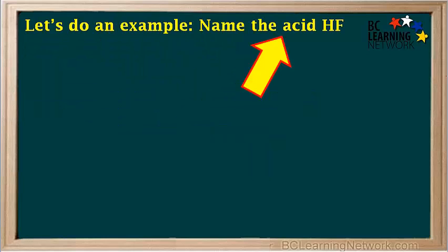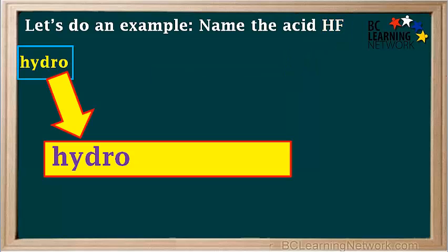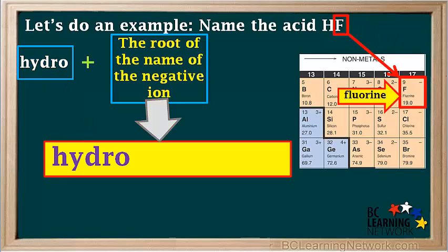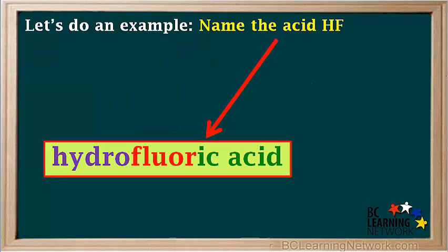Let's do an example: name the acid HF. HF is an acid without oxygen, so we use the rules for naming acids without oxygen. We start by writing the prefix hydro. Next we add the root of the name of the negative ion — the element is fluorine, so the root is fluor (notice the U comes before the O in fluorine). Lastly, we add the ending -ic acid. So the name of the acid HF is hydrofluoric acid.